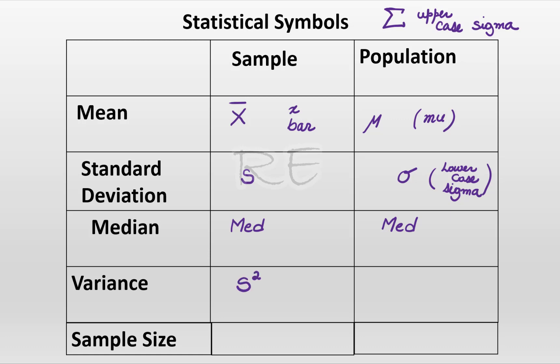For the variance, we use S squared, uppercase S squared, which is S times S. And for the population, when it comes to variance, we use sigma squared, lowercase sigma squared, which means sigma times sigma.